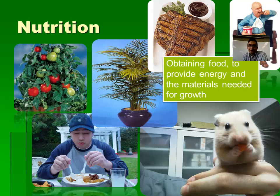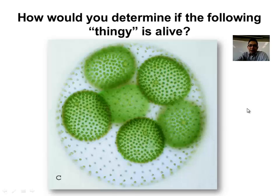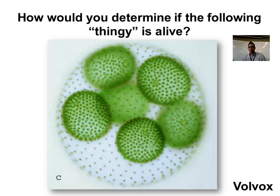Nutrition — living things need to be able to obtain food or some kind of energy source. Glucose works for most things; some bacteria use other types of chemicals, which is really fascinating. So if you saw something like volvox, you'd go through that list of characteristics to determine whether it's alive. Can you think of things that show all those characteristics but you would not consider to be alive? Post your questions online.